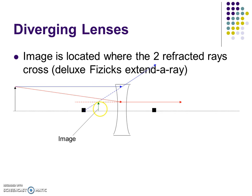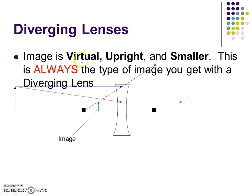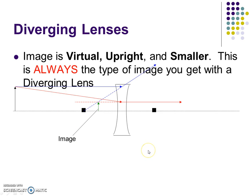The image is located where the two refracted rays cross — extend this ray back, and where these two cross, that's where your image is located. It's virtual, because it's on the same side of the lens as the object. It's upright, facing the same direction as the object, and smaller — the green arrow is smaller than the black arrow. You'll always get this type of image with a diverging lens.